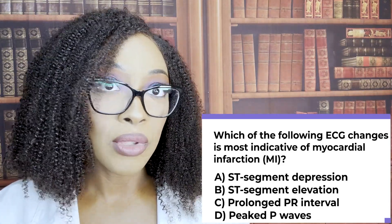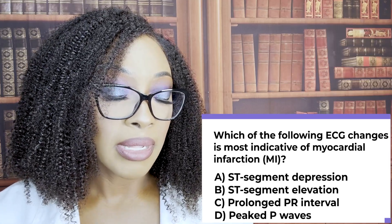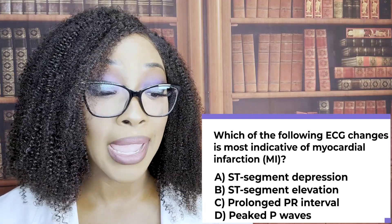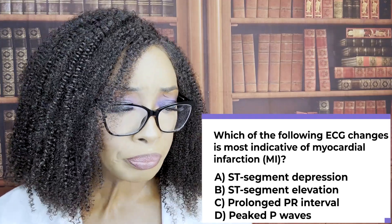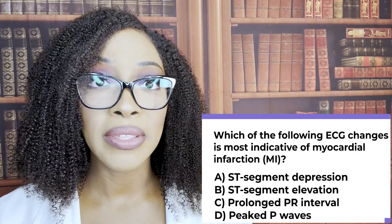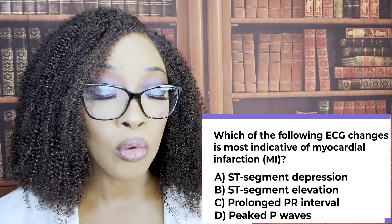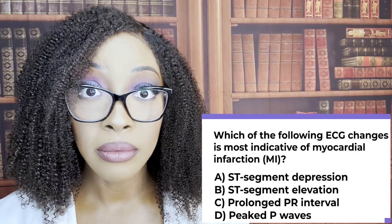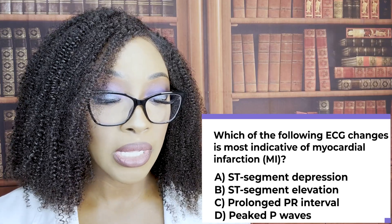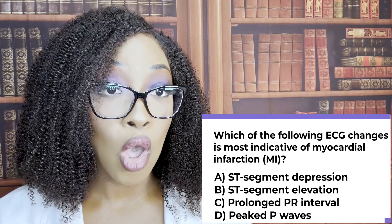The correct answer is B, ST segment elevation — that's your STEMI. But you need to know the others for testing purposes. ST segment depression — where do we see that? In ischemia. Prolonged PR interval suggests AV block. And peaked P waves suggest right atrial enlargement. Make sure you know all four of these.